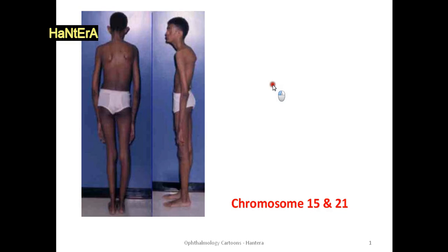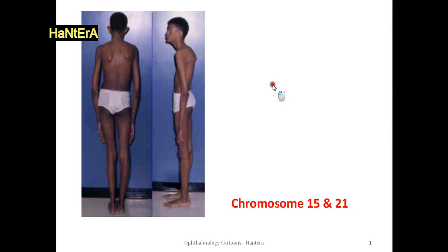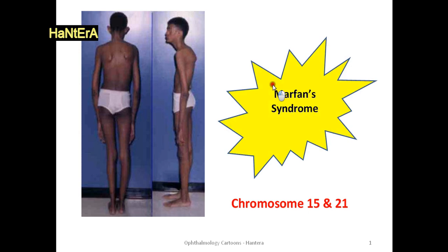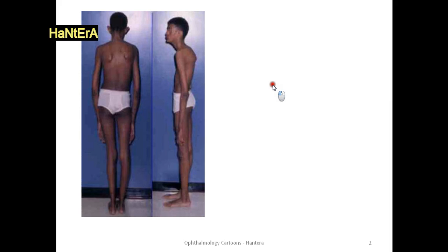Marfan syndrome has abnormal formation of fibrillin-1 due to autosomal dominant inheritance. Elastin fibers are found throughout the body but are particularly abundant in the aorta, ligaments, and the ciliary zonules of the eye. Consequently, these areas are among the worst affected. Remember to ask the patient about his family history and request genetic analysis.